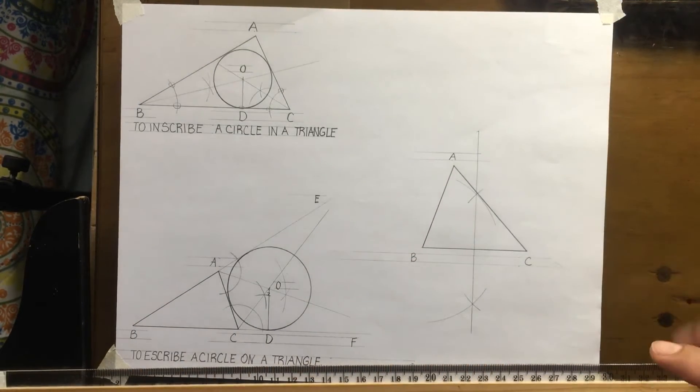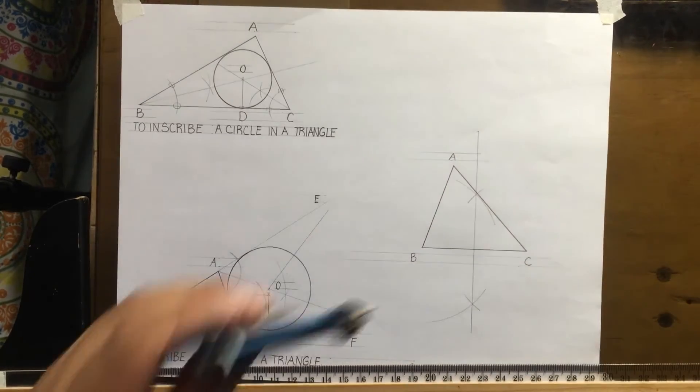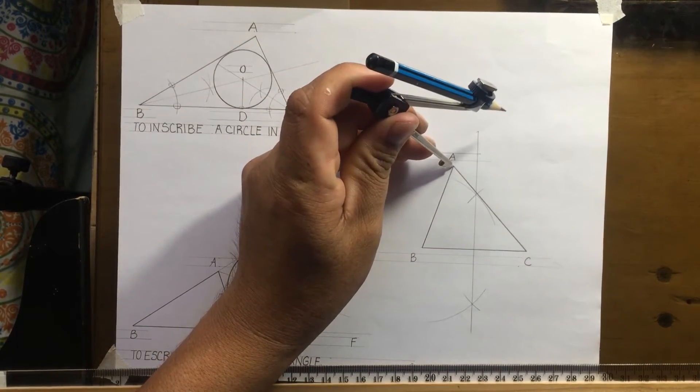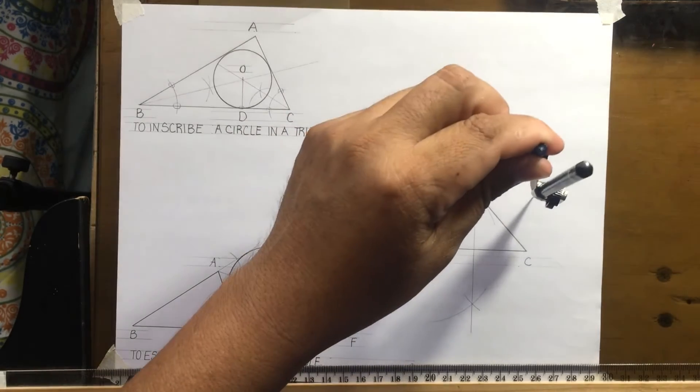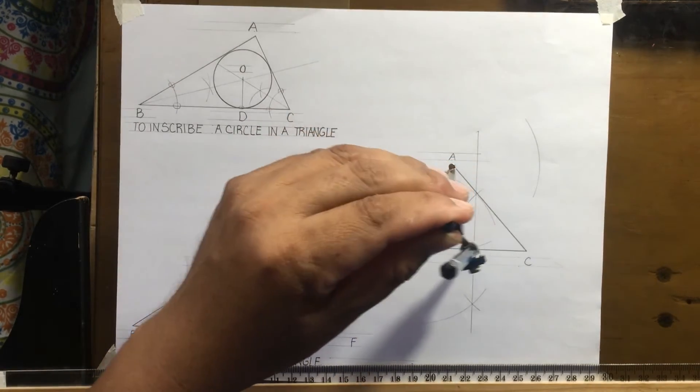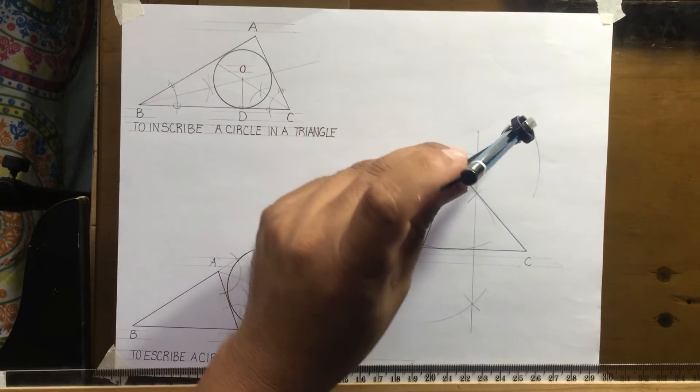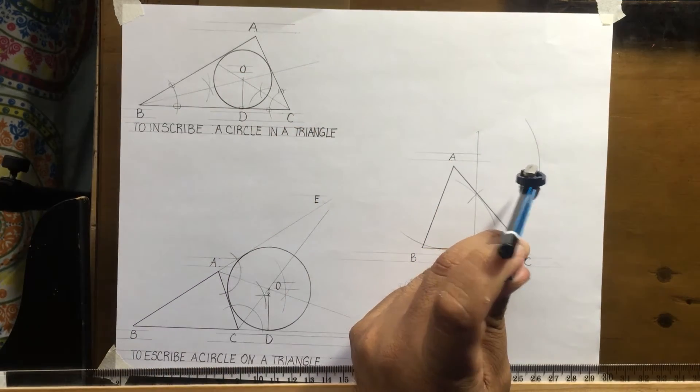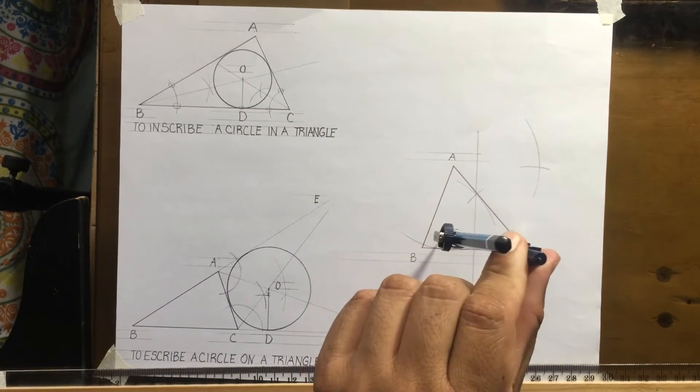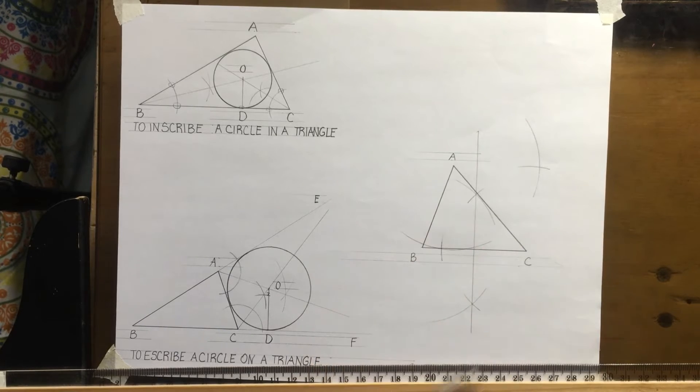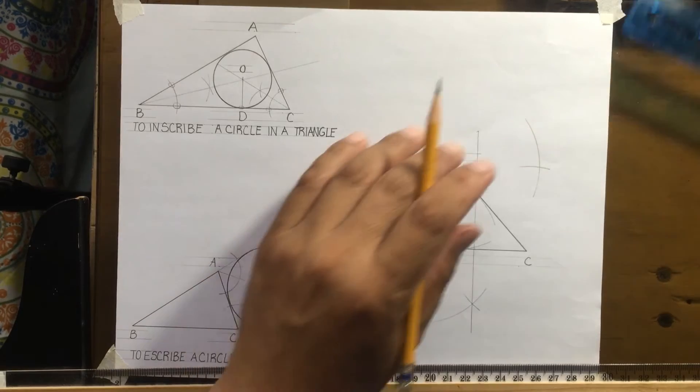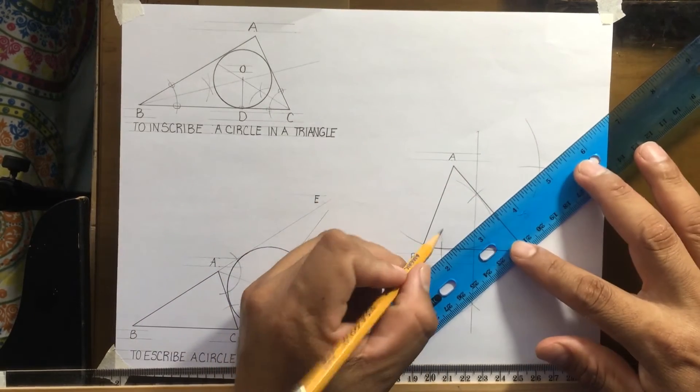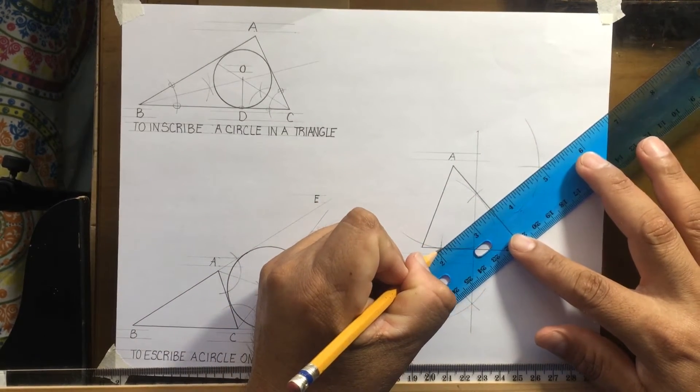Same concept, but this time I'll use AC. I open more than half and scribe the arcs, then join the intersection points.